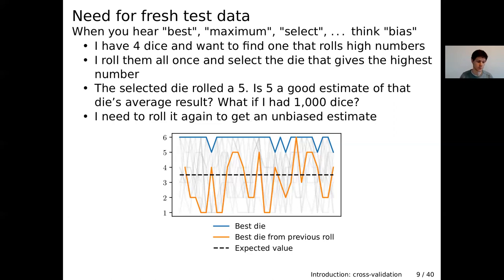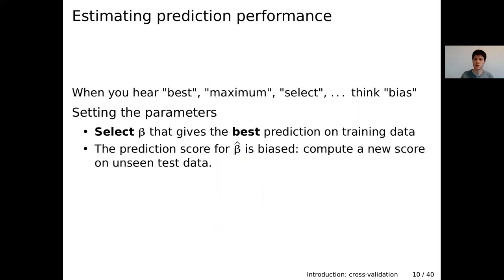So to get a real estimate of the output of this die, I need to throw all the dice once to select the best one, and then throw it again to get a new unbiased estimate. It's the same with machine learning: we need one set of data to compare different models and select the best parameters, but we cannot use this same data to see how well those parameters perform. We need fresh data — a sample not used for selecting the model parameters — to estimate performance.